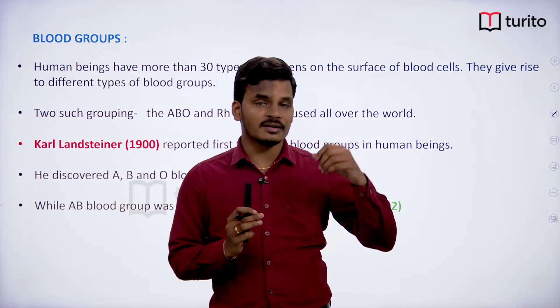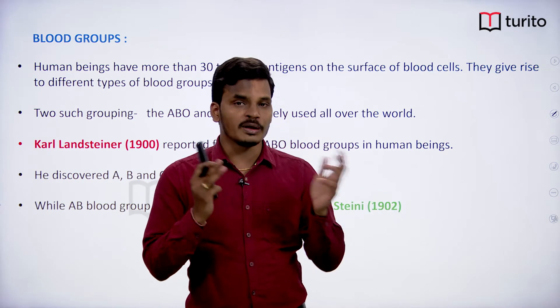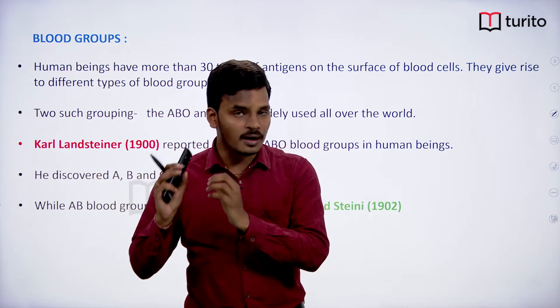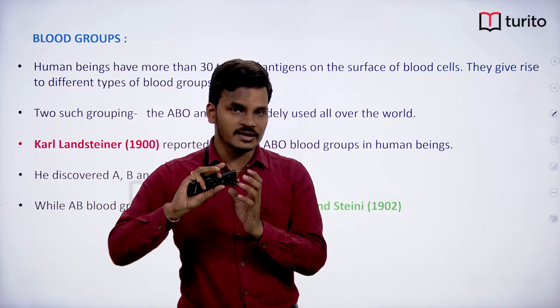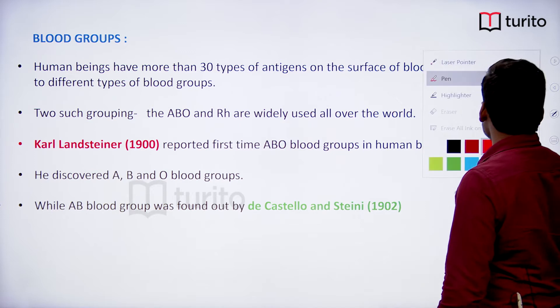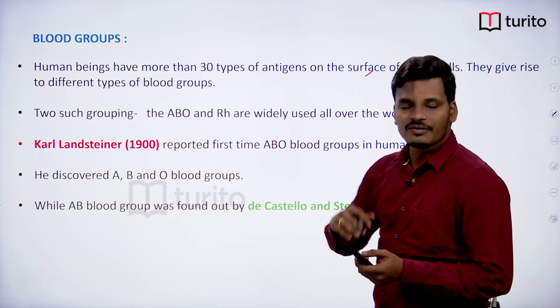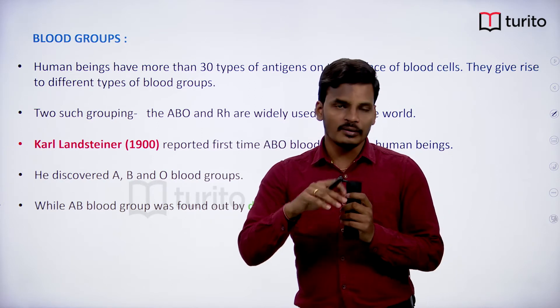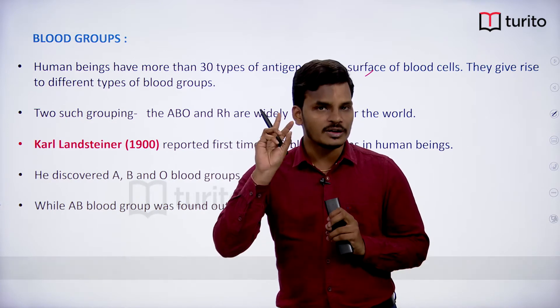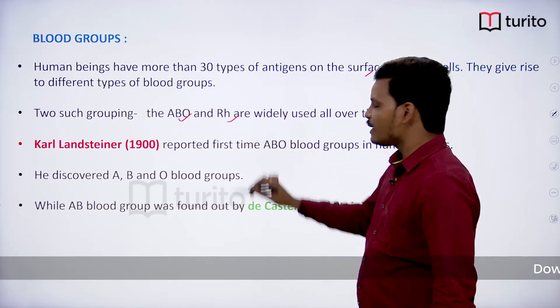We will discuss one of the very interesting topics in the physiology chapter — body fluids and circulation — that is blood groups. There are different types of blood groups: A, B, AB, MN, Bombay blood group, and so on. All these blood groups are due to the antigens present on the membrane of the RBC. There are more than 30 types of antigens present on RBC membranes. The major blood groups are only two: the ABO blood group system and the RH blood group system.